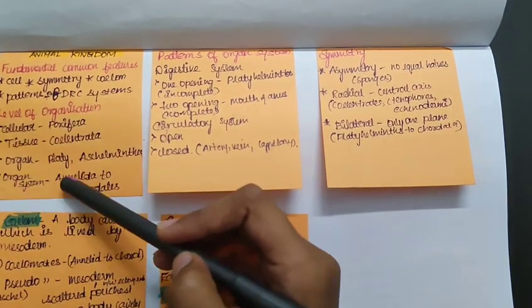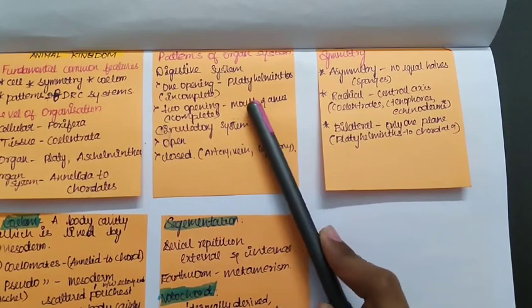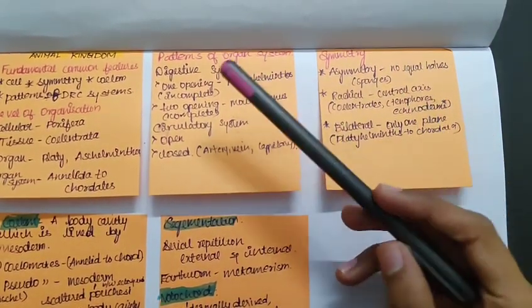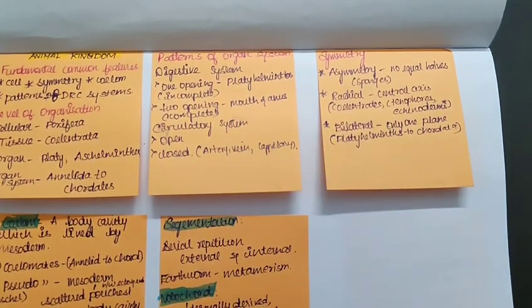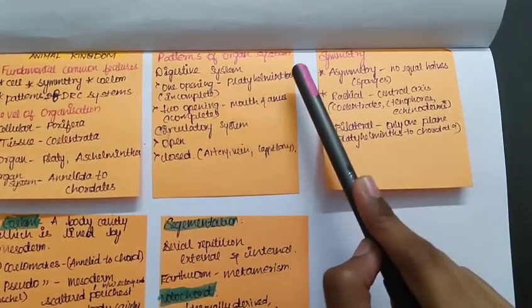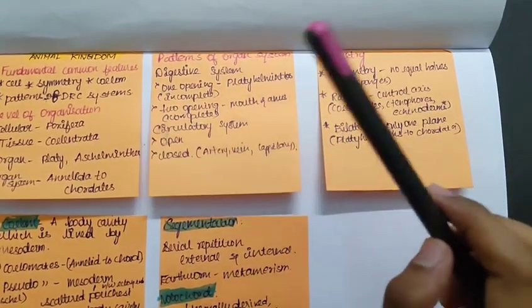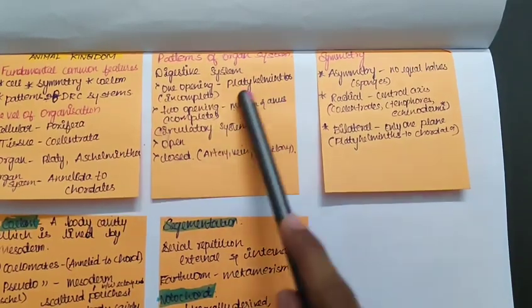Talking about the patterns of organ system, in the digestive system we have two patterns which is only one opening, like both anus and mouth all together. There is only single opening, that means incomplete digestive system, and it is seen in Platyhelminthes. Talking about the complete digestive system, it will be having two openings, that is mouth and anus.